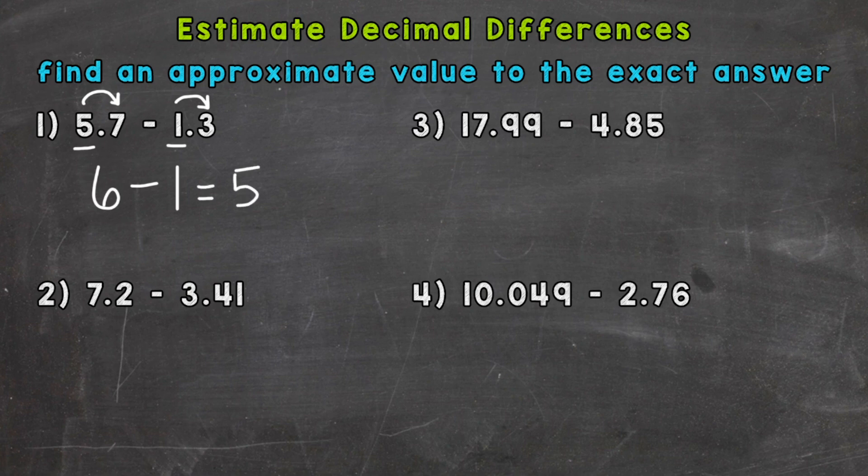So we can come back up here, write out a squiggly equal sign, 5. So this symbol here just means approximate or close to or about. We can use that symbol when estimating because 5 is not the exact answer.